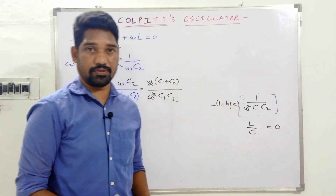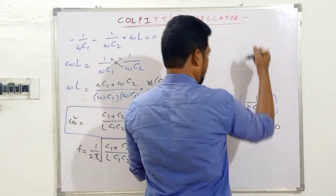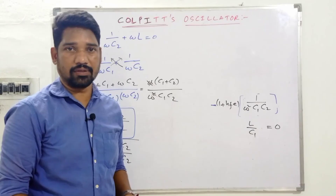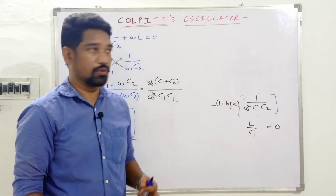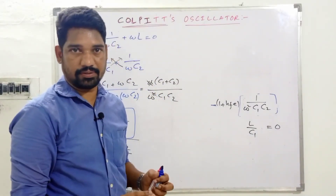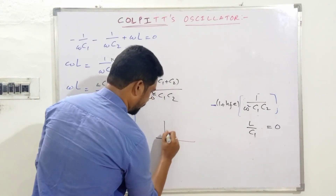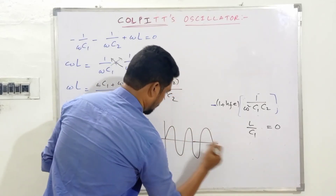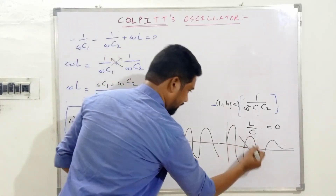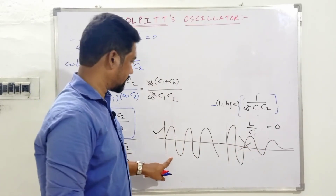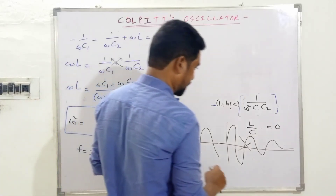But this is not all — we also need to evaluate the value of HFE to produce sustained oscillations. We cannot freely choose any capacitor, inductor, or HFE value. For sustained oscillations there is a specific condition to be met; otherwise the oscillator cannot maintain constant amplitude — the output may damp out over time. To avoid that, we must select a transistor with an appropriate HFE value.